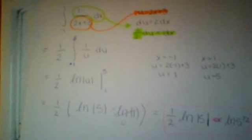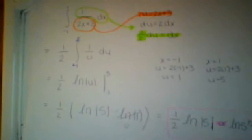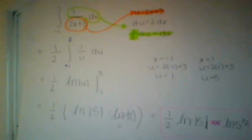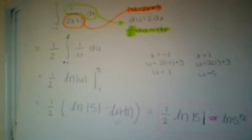So we can pull out the 1/2 and take the natural logarithm of the absolute value of u, evaluated from 1 to 5.